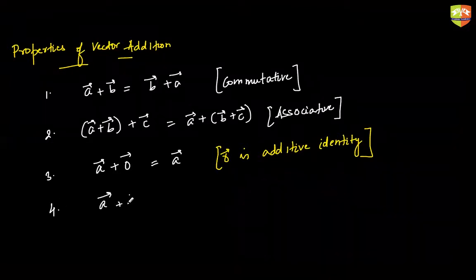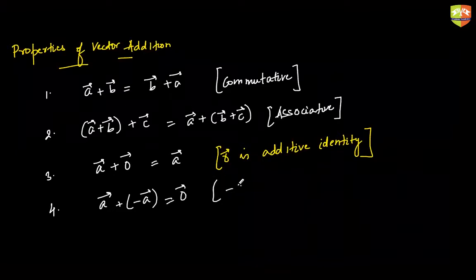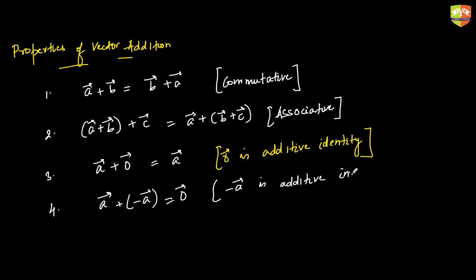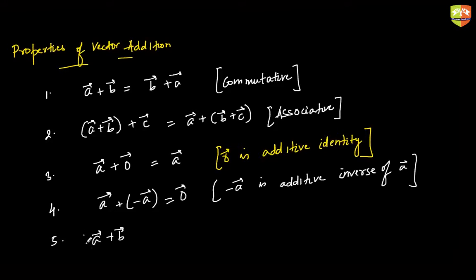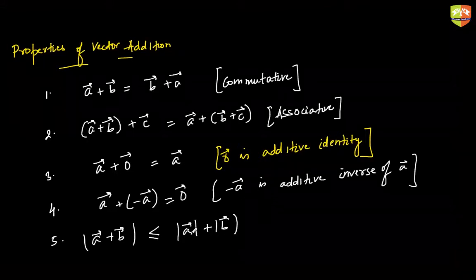There is also the additive inverse: the negative of a vector is its additive inverse, so negative A is the additive inverse of vector A. The triangle inequality states that the magnitude of A plus B is always less than or equal to the magnitude of A plus the magnitude of B. Equality holds when A and B are in the same direction.